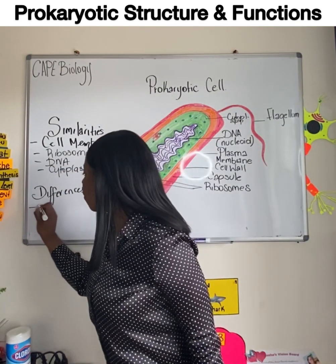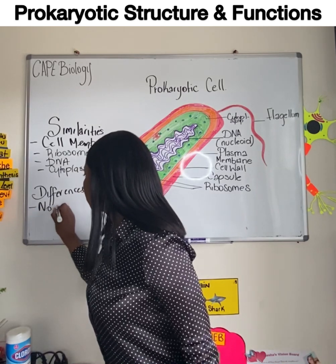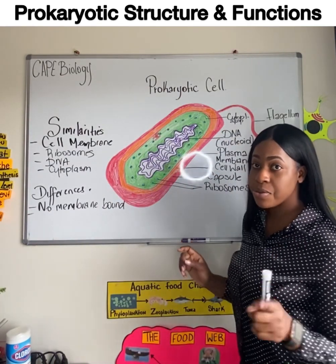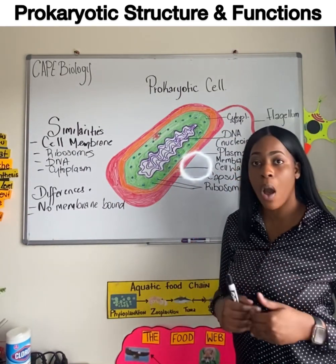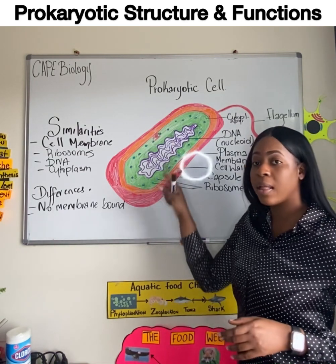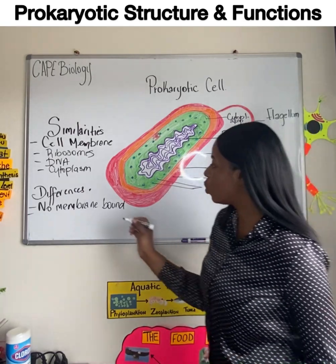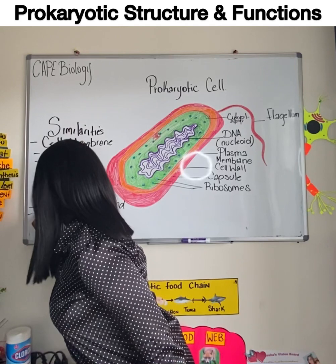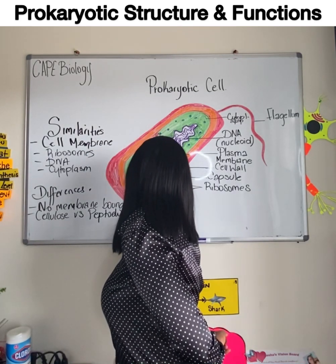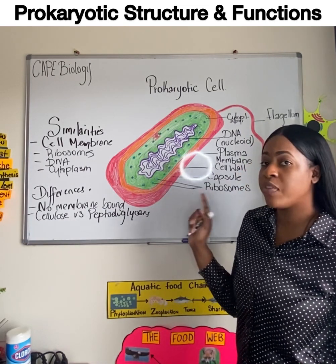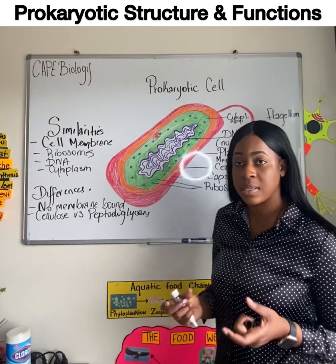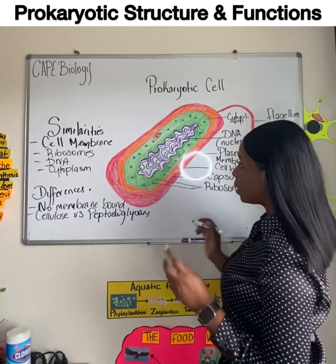For differences: prokaryotes have no membrane-bound organelles. We saw in the eukaryotic video that plant cells have a cell wall made of cellulose, while the prokaryotic cell wall is made up of peptidoglycans. Another important difference is the genetic material — in prokaryotes it is not enclosed, while in eukaryotes it's enclosed in a nuclear envelope or nuclear membrane.